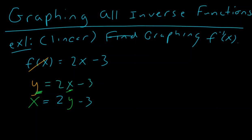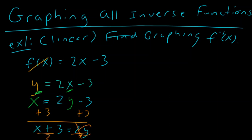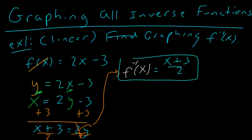Now we solve for y. We start by adding 3 to both sides — notice I'm doing a different color for every new operation — so now we have x plus 3 is equal to 2y. Our final step here is we divide both sides by 2. We always take our y value and rewrite it as f inverse of x, which is equal to x plus 3 over 2.